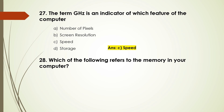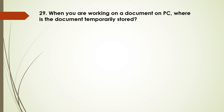Question number 28: Which of the following refers to the memory in your computer? Options are: LRN, RAM, CPU, USB. The answer is B, RAM. Question number 29: When you are working on a document on a PC, where is the document temporarily stored? Options are: RAM, ROM, flash memory, CD-ROM. The answer is A, RAM.